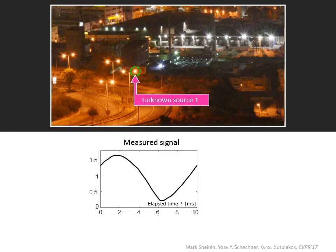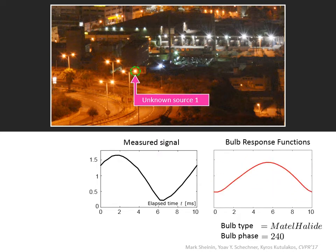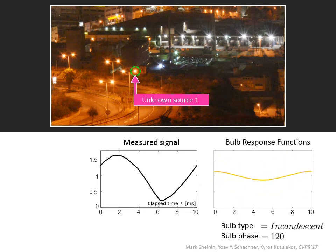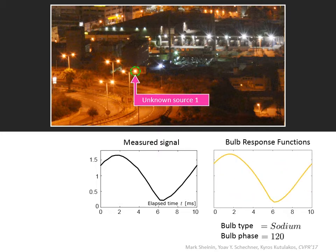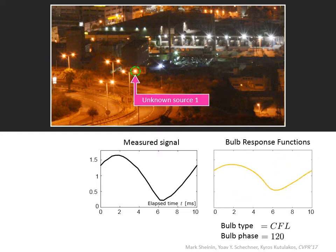Let's see an example for using DELIGHT. Below is one bulb's measured flicker signature. By searching for the closest match in the DELIGHT database, we discover that this bulb is of the type sodium and its AC phase is 120 degrees. Repeating this process across the image leads to the phase map that we showed.